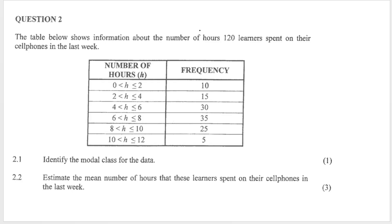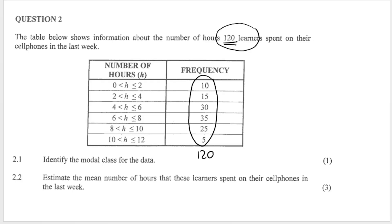The table below shows information about the number of hours 120 learners spent on their cell phones in the last week. If you add up all of these frequencies you should get 120. So if they don't give you the total in the question, you add up the frequencies to get the total number of learners. For example, 10 students spend between 0 and 2 hours on their phone, and 15 students spend between 2 and 4 hours.